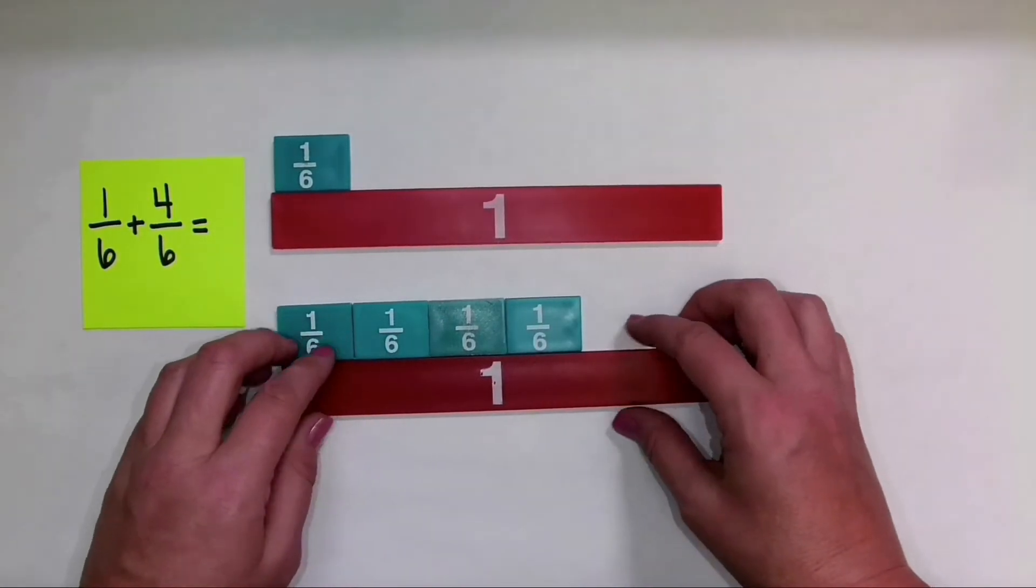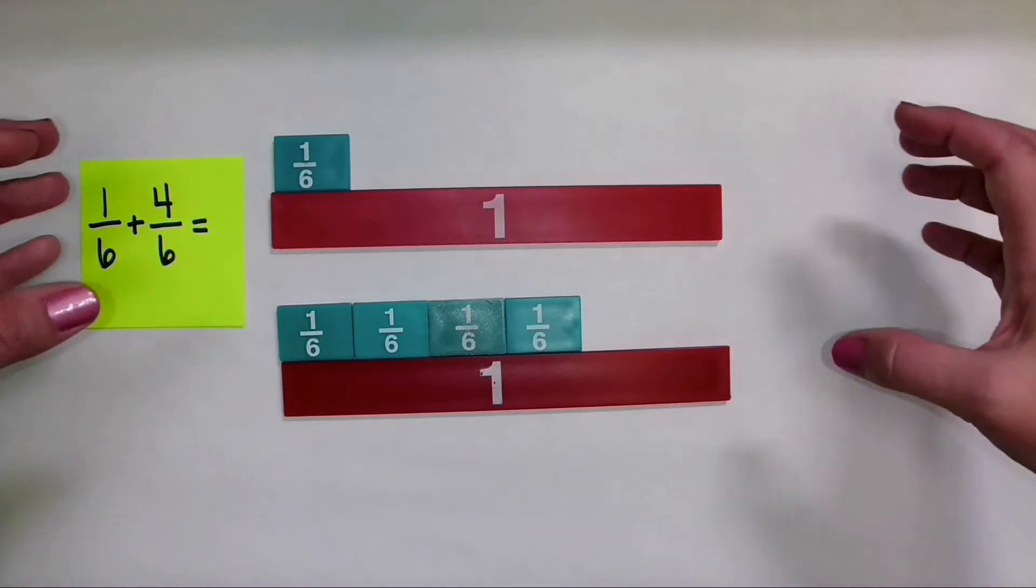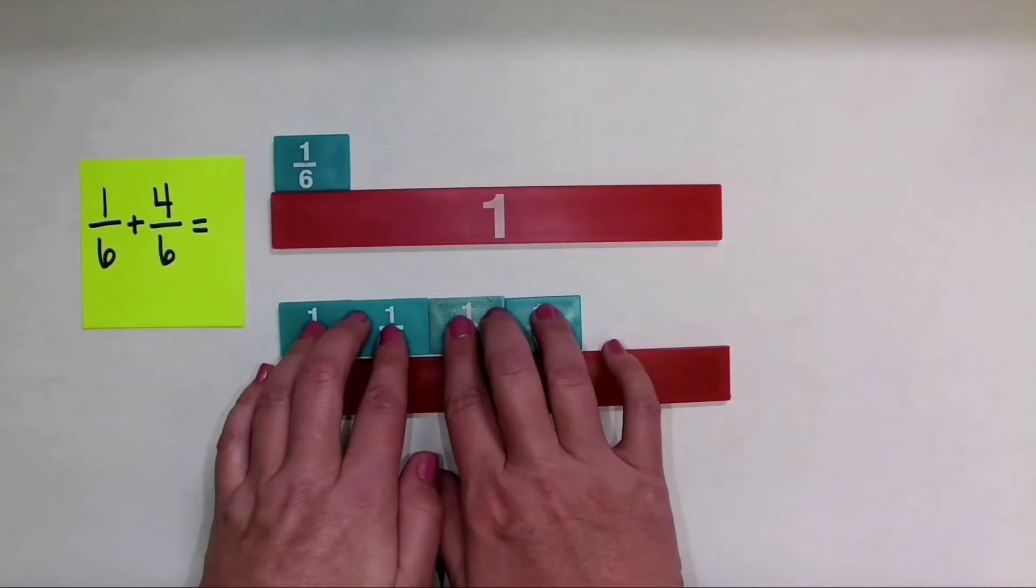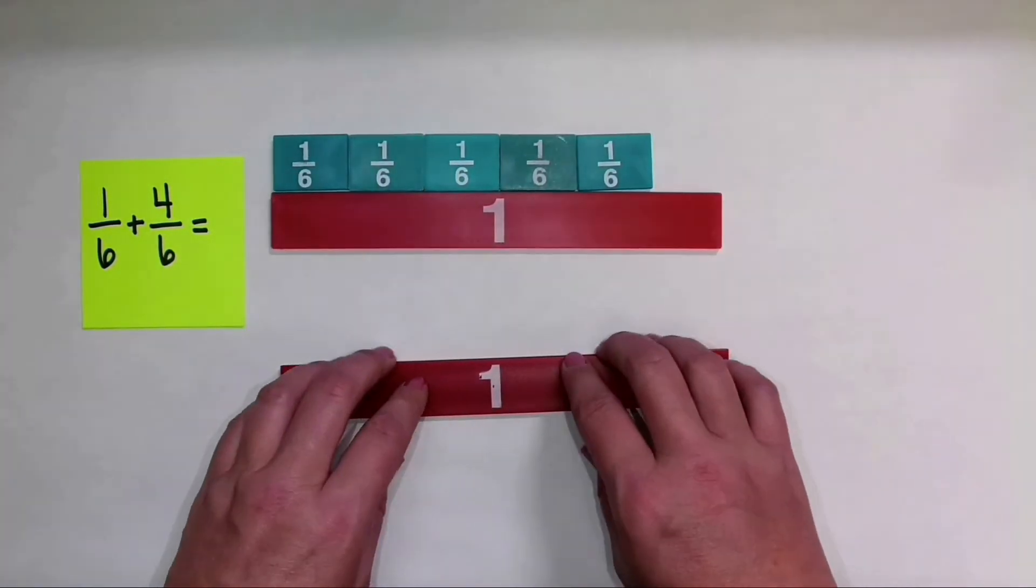So I'll show each of the addends there. So I have one-sixth and four-sixths. Now to add them together, I'm going to add the parts of the fraction. You really need to emphasize that. So I'm going to take these four one-sixth parts and I'm going to add them to one-sixth.